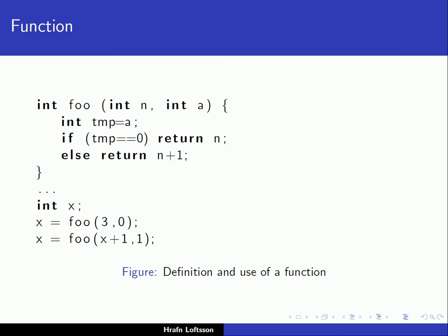We're talking about the mode in which the actual parameters used in the call are associated with the formal parameters used in the definition. When we define the function, it is clear which mode we're using. For example, in C or C++ code, if nothing is stated in front of the type regarding the parameter passing mode, the default is pass by value. So it's clear at the time of writing, at the time of definition of the function, what mode is used.